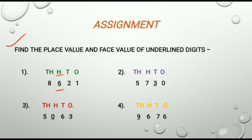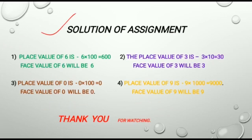And in the second question, the underlined digit is 3 which is at 10's place. In the third question, the underlined digit is 0 which is at 100's place. I have also provided you with the solution of the assignment. After solving the questions, you can recheck your answers.